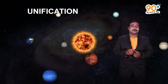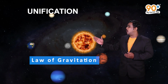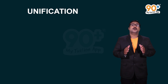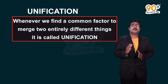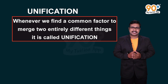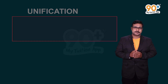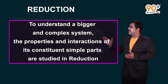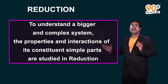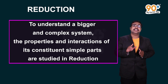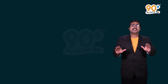These two are different phenomena, but the basic law governing both is the same — that is, the law of gravitation. Whenever we find a common factor to merge two entirely different things, we call it unification. To understand a bigger and complex system, the properties and interactions of the constituent parts are studied — this is called reduction.